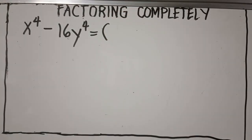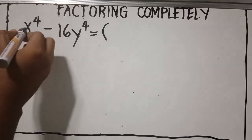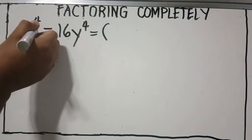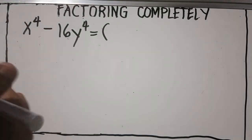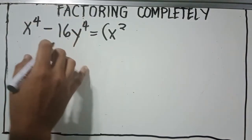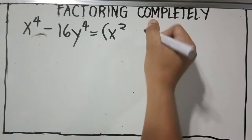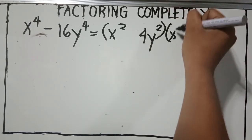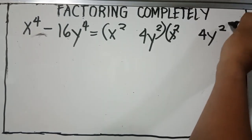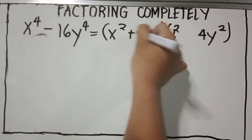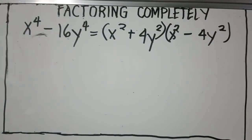x⁴ − 16y⁴. This is obviously a difference of two squares. Applying our knowledge on factoring difference of two squares, we simply get the square root of each term regardless of the operation. The square root of x⁴ is x², and the square root of 16y⁴ is 4y². So we get the factors (x² + 4y²)(x² − 4y²), which are conjugates of each other.